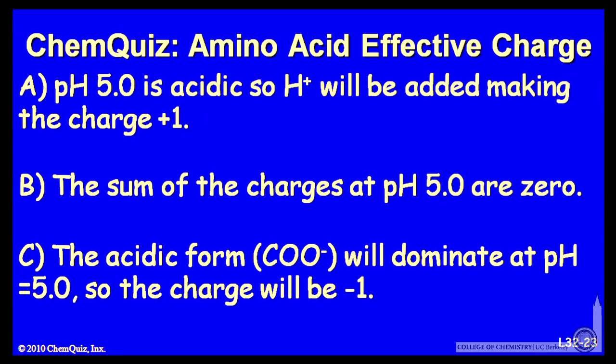B, the sum of all the charges at pH 5 are 0. Or C, the acidic form, COO minus will dominate at pH 5, so the charge will be minus 1.